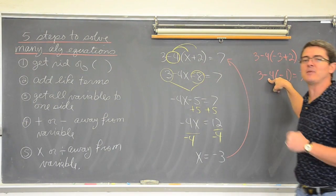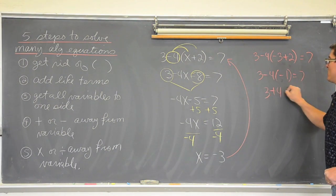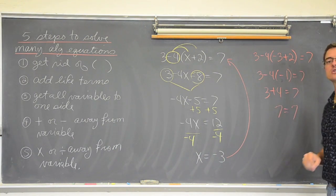Two negatives together when you multiply make a positive. So now we have 3 plus 4 equals 7. And guess what? It sure is.